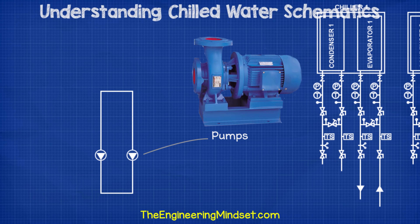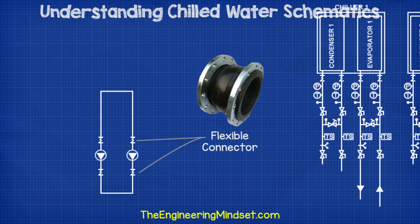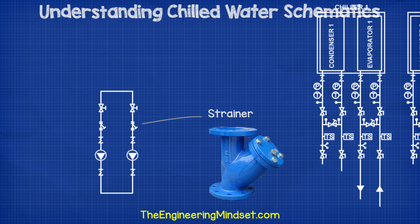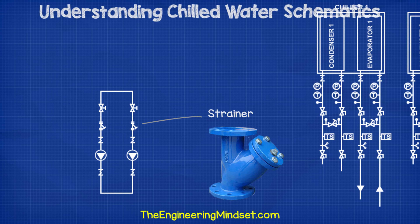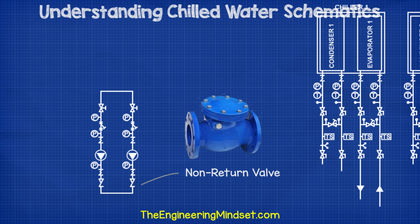Next, we'll need some pumps to push the water through the chiller and around the building. For this, we'll usually have two or more pumps in parallel, typically running in duty and standby — the triangle points in the direction of flow. Then we'll need some flexible connectors as the pumps will cause vibrations. Then we'll want some isolating valves so that we can cut one or all of the pumps off for maintenance. Then we'll have some strainers which capture the particles and dirt in the water and prevent them from entering the pump and causing damage — some pump setups don't use this, and some will use just one large strainer elsewhere in the system. Then we'll have some pressure gauges to allow manual readings. Then we'll have a non-return valve which prevents the pressure in the pipework from forcing the pump to rotate backwards when it's turned off.